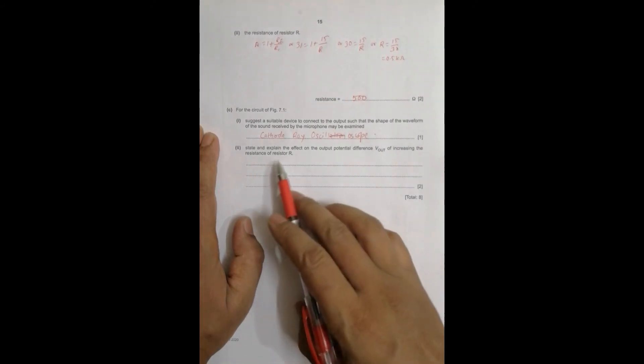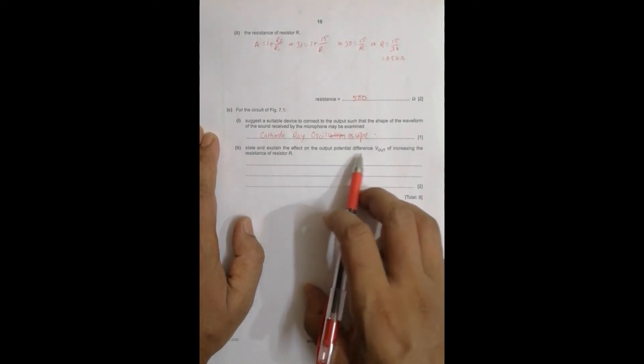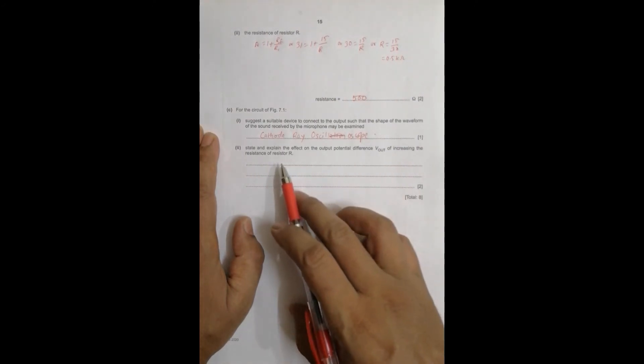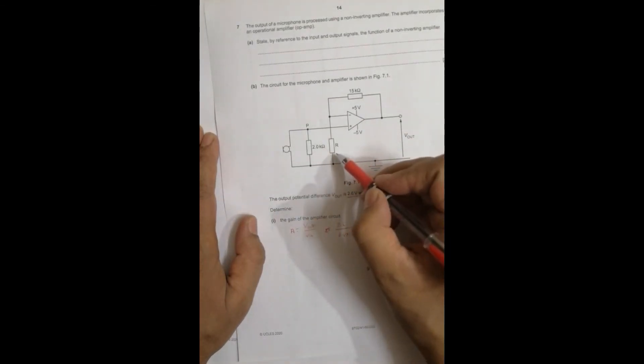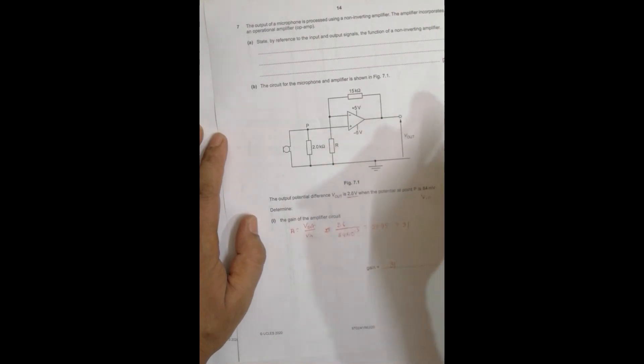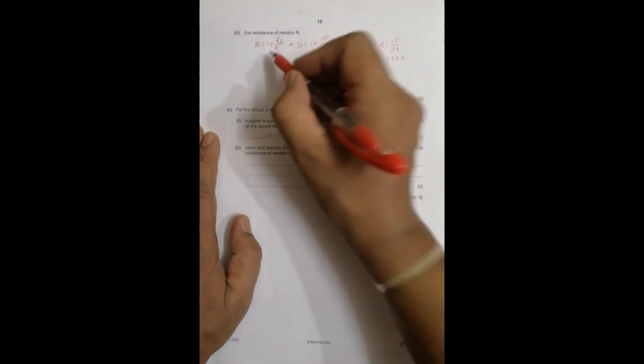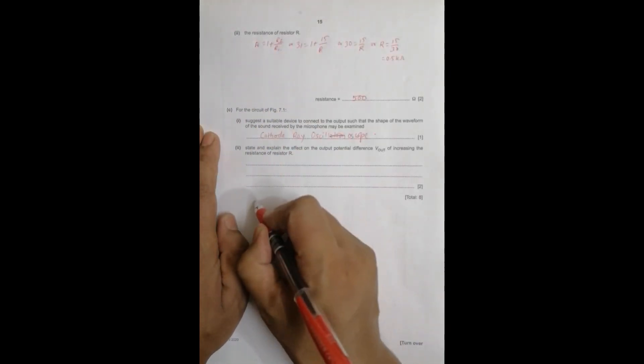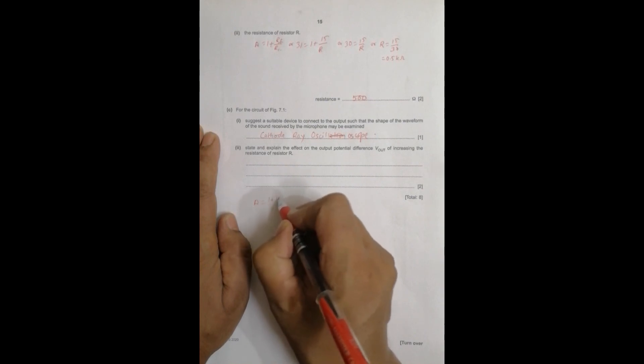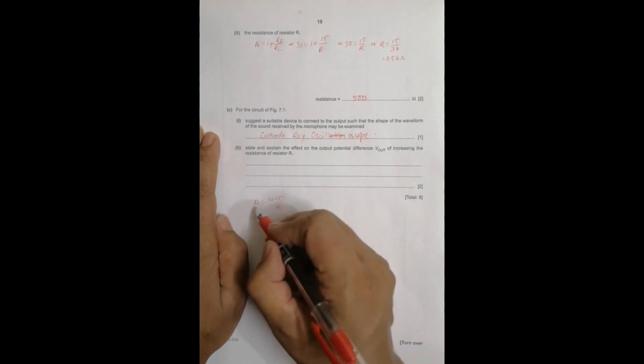Now, explain the effect on the output potential difference V out of increasing the resistance of resistor R. So we have to increase R and see what happens to the output. So when we increase this R, what we have is, so this formula here, this A is equal to 1 plus 15 by R. So if R is increased, A decreases.